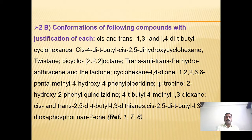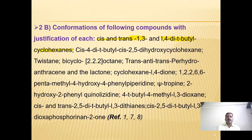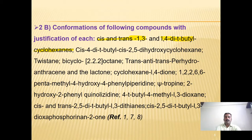Part B of Chapter 2 covers conformations of the following compounds with justification: cis and trans 1,3- and 1,4-di-tert-butylcyclohexane, cis-2,5-dihydroxycyclohexane, twist boat cyclodecane, bicyclo[2.2.2]octane, and trans-anti-trans-4-hydroanthracene and the lactone.